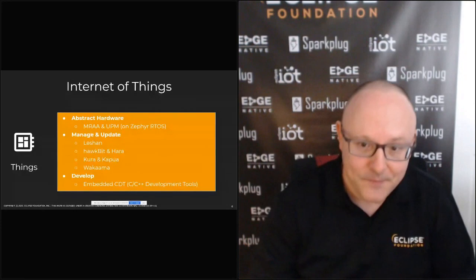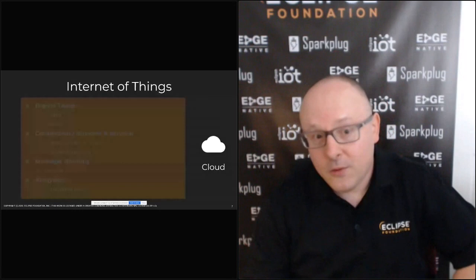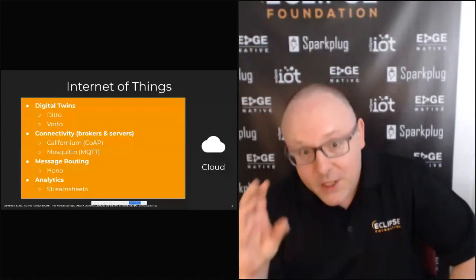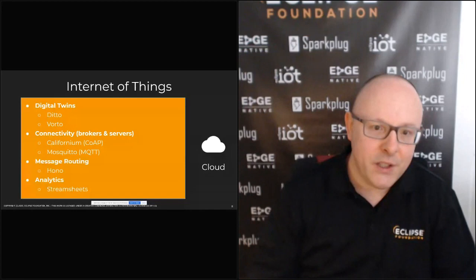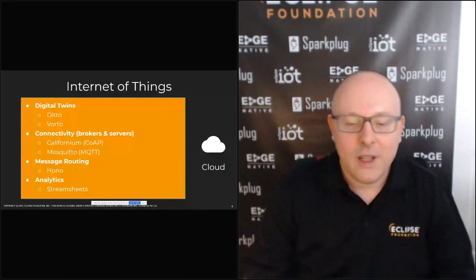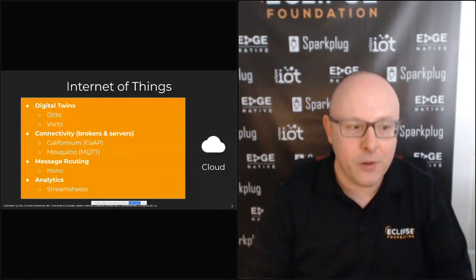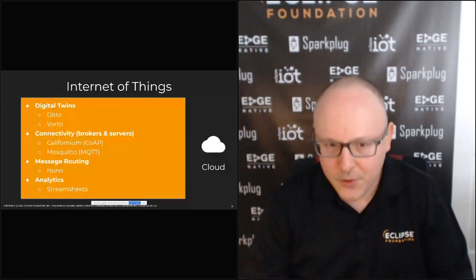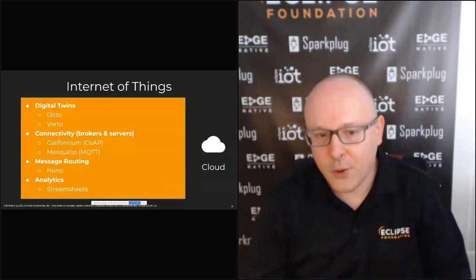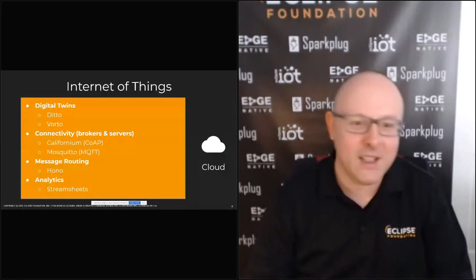Now focusing on cloud platforms — we have plenty of technologies in that department as well. The digital twin pattern is very influential and popular in the market right now, and we have a fantastic duo of projects for that. Eclipse Ditto is your digital twin runtime, and Eclipse Vorto is a tool that enables you to model the properties of IoT devices and share those descriptions in a repository. You can visit vorto.eclipse.org to access that public repository of device definitions. Both Ditto and Vorto are part of the Bosch IoT suite — used heavily in a commercial perspective — but the core technology is available as open source at the Eclipse Foundation.